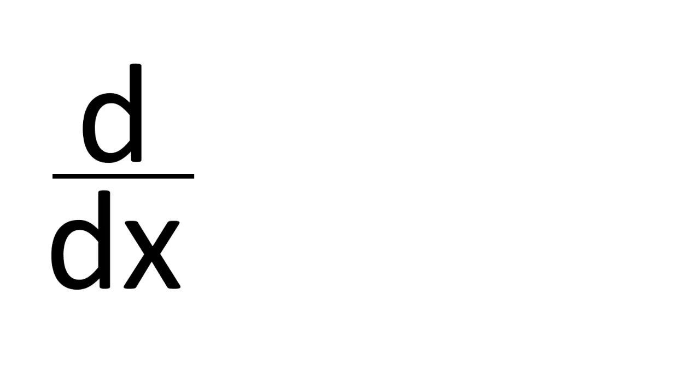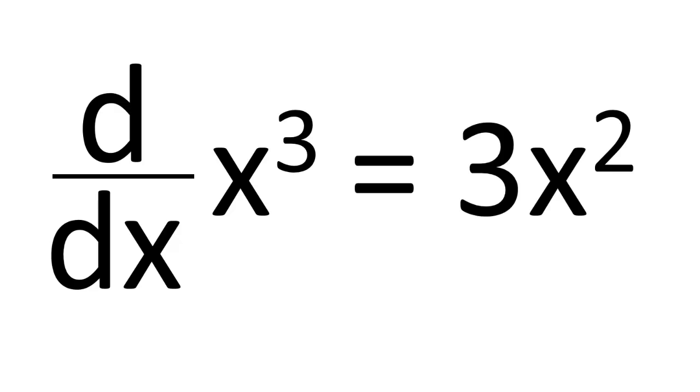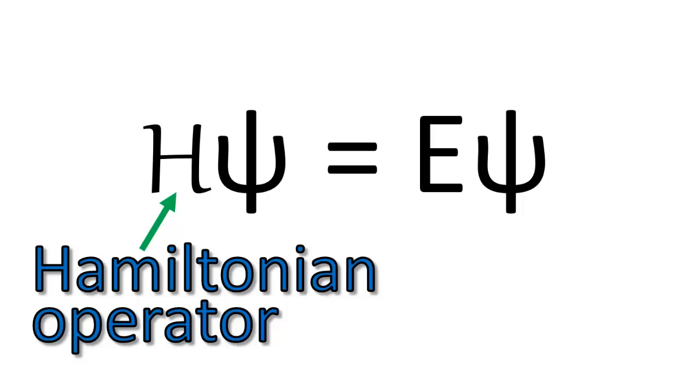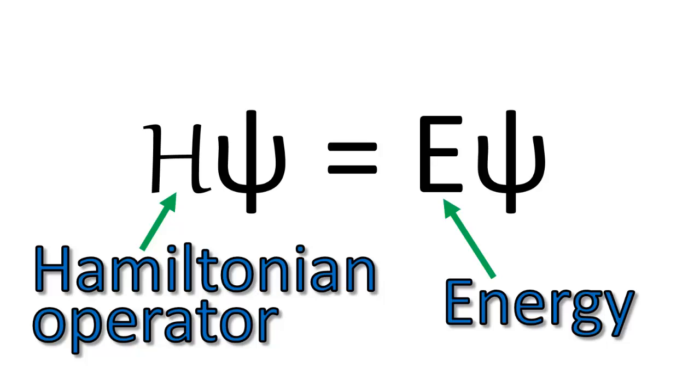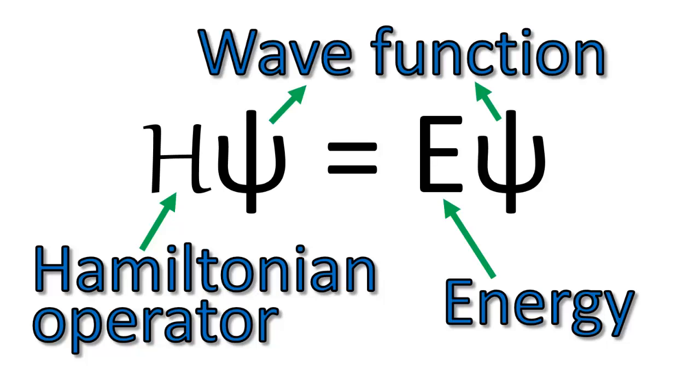An operator is very different from a simple algebraic variable. For instance, the operator d/dx — for you calculus fans — is an operator that, when acted on the function f(x) = x³, transforms this function into 3x². So the Hamiltonian operator transforms a function into another function. The E stands for the actual energy of the electron, and the Greek letter psi represents the wave function, which is a mathematical function that describes the wave behavior of the electron. The probability distribution map, called the orbital, is actually a plot of the wave function squared.